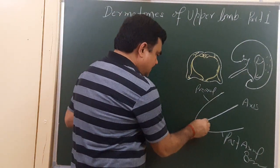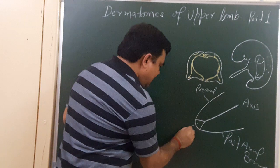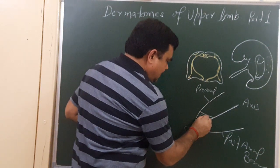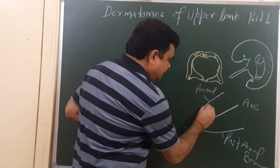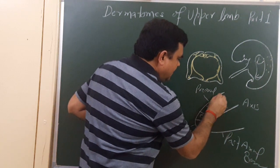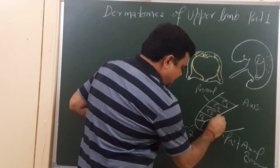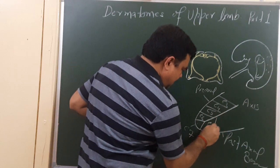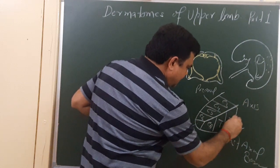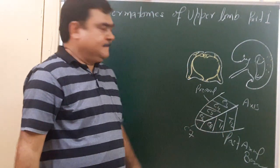Here you can see the dermatomes on the developing limb: this is the C7 dermatome, this is C6, C5, C4, C3, C8, T1, and T2. These are the dermatomes.